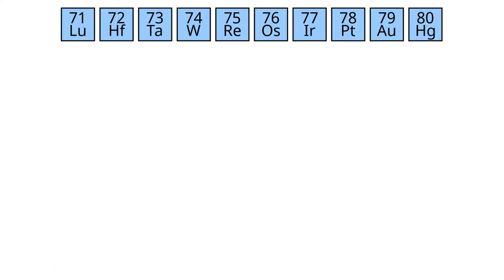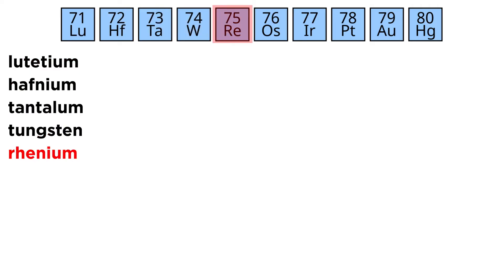Arriving now at the third row in this block, we find lutetium, hafnium, tantalum, tungsten, rhenium, osmium, iridium, platinum, gold, and mercury.